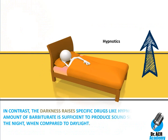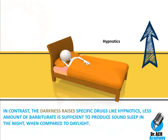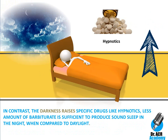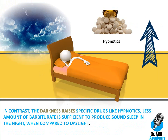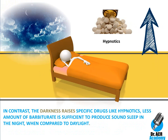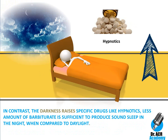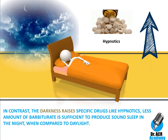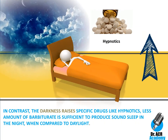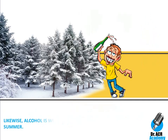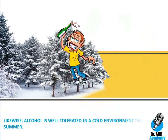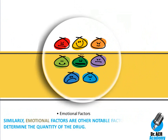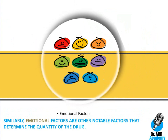In contrast, darkness raises the effect of specific drugs like hypnotics — a less amount of barbiturate is sufficient to produce sound sleep at night compared to daylight. Likewise, alcohol is better tolerated in a cold environment than in summer. Similarly, emotional factors are other notable factors that determine the quantity of the drug.